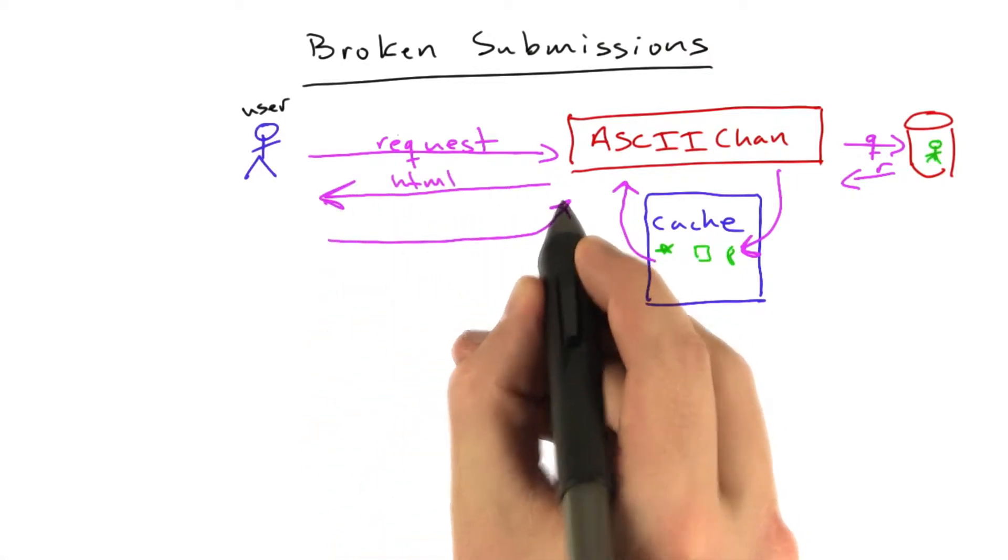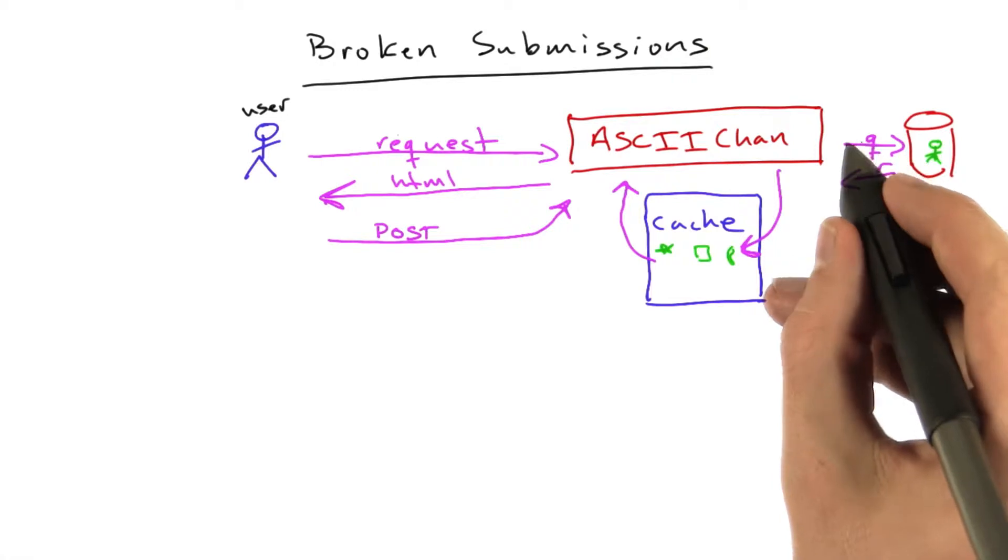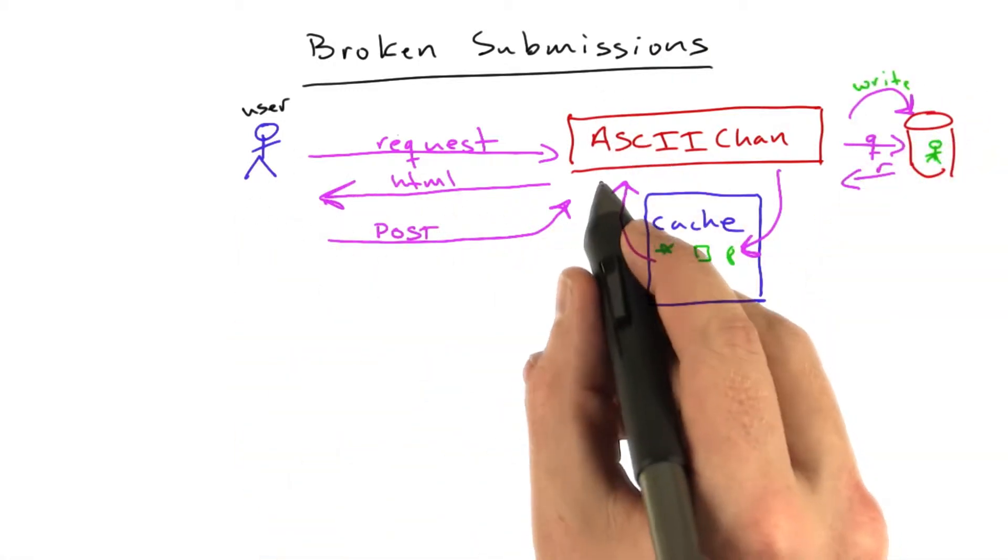Now, when we submitted a new piece of art to ASCII Chan, we wrote that art to the database, and then we redirected the user back to the front page.